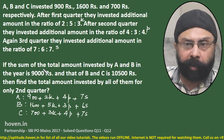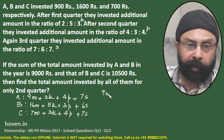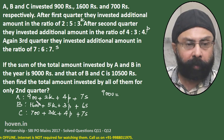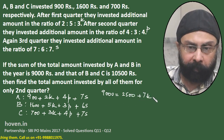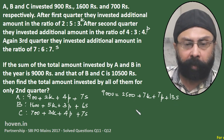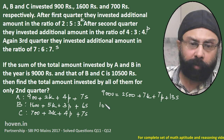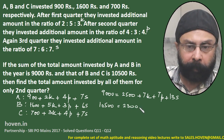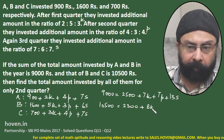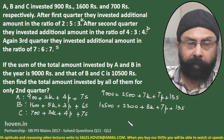Now, what is given to us can be put in the form of equations. A and B together is 9000, so: 9000 = 2500 + 7k + 7p + 13s. Similarly, the total for B and C is 10500, so: 10500 = 2300 + 8k + 7p + 13s. These are the two equations.